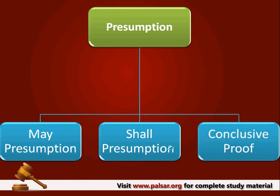Under May Presumption, once a fact is proved, the court shall conclude that some other fact is also proved. But whenever the Act provides this as a May Presumption, it means the court has a choice either to conclude that the other non-proved fact is proved or not proved. When it comes to Shall Presumption, when one fact is proved, the court shall necessarily come to a conclusion that the other fact is also proved.